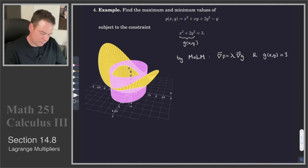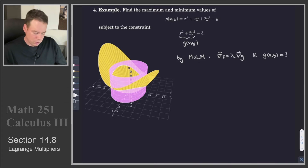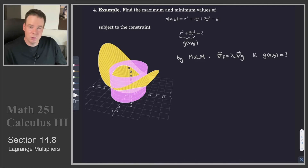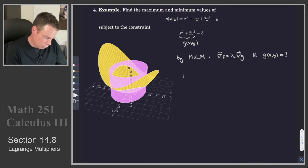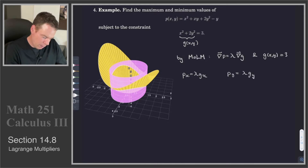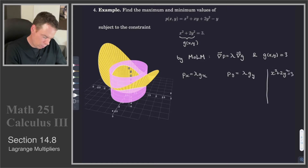We're trying to find x and y that satisfy these three equations. There are two equations hidden in the gradient equation, because these functions are of two variables so the gradients are two-dimensional vectors. The gradient equations unpack to: p sub x is equal to lambda times g sub x, p sub y is equal to lambda times g sub y, and g of xy equals 3, which we rewrite as x squared plus 2y squared equals 3.